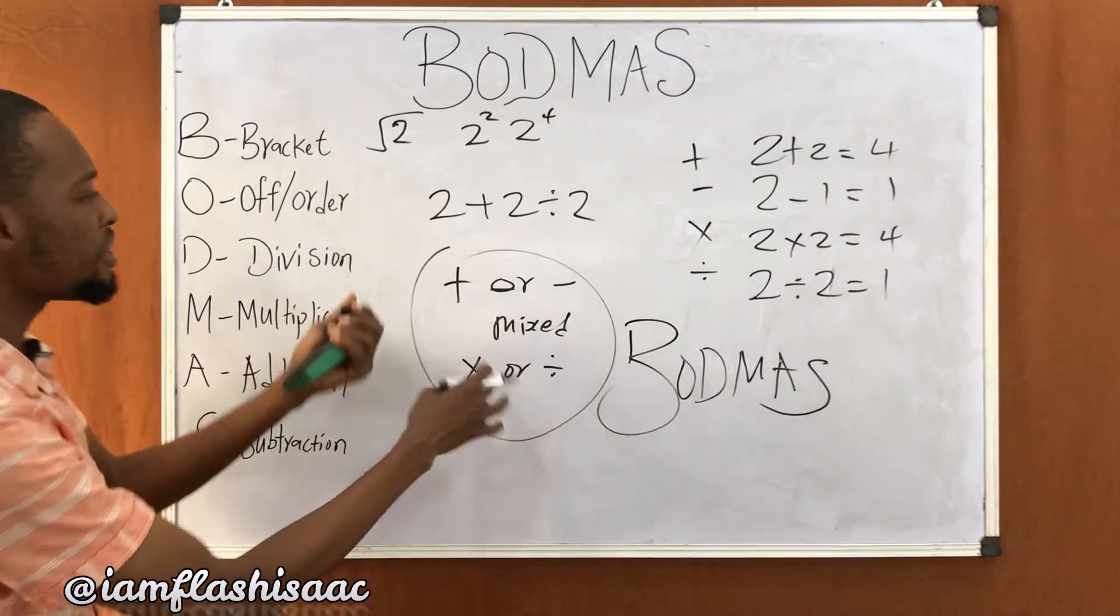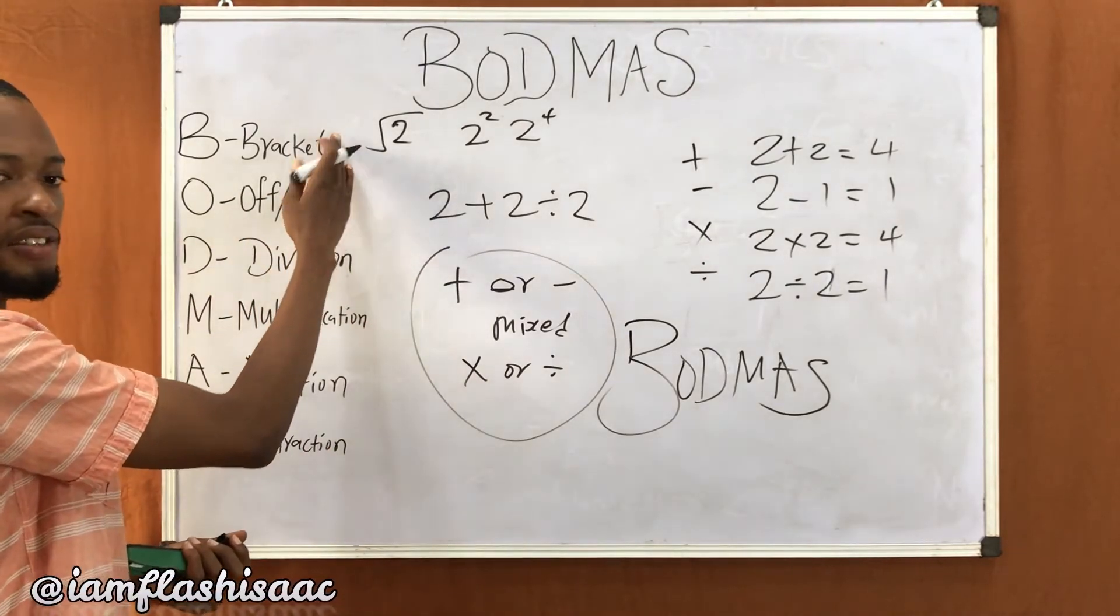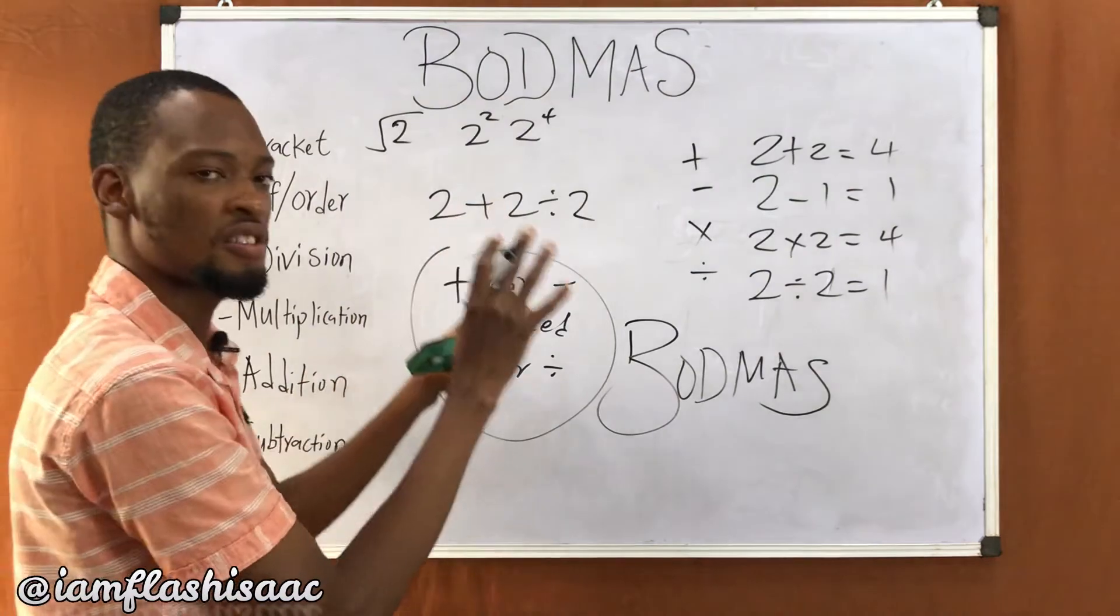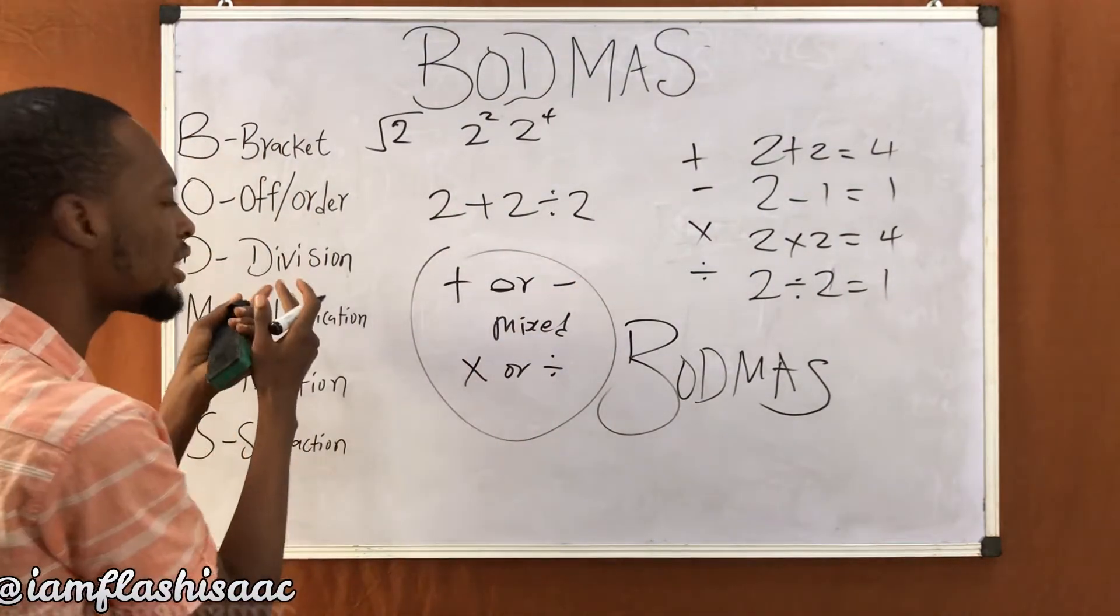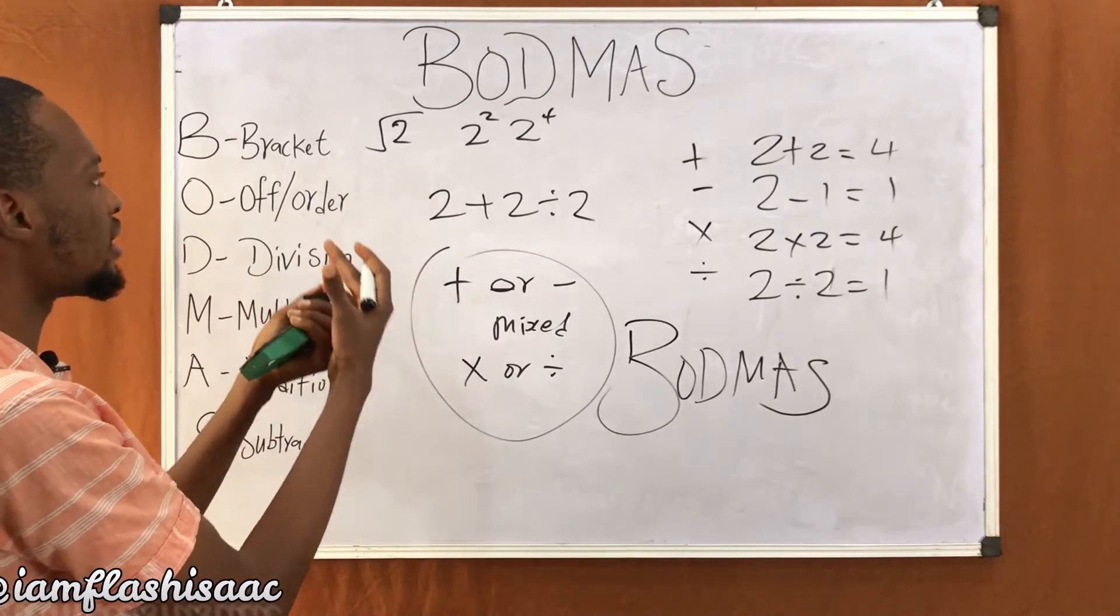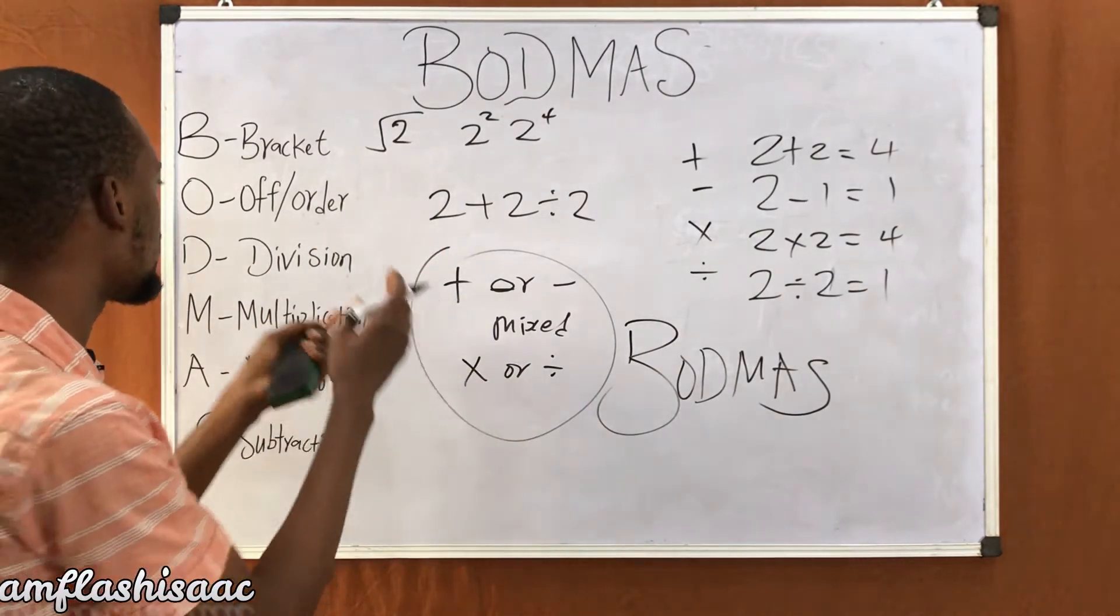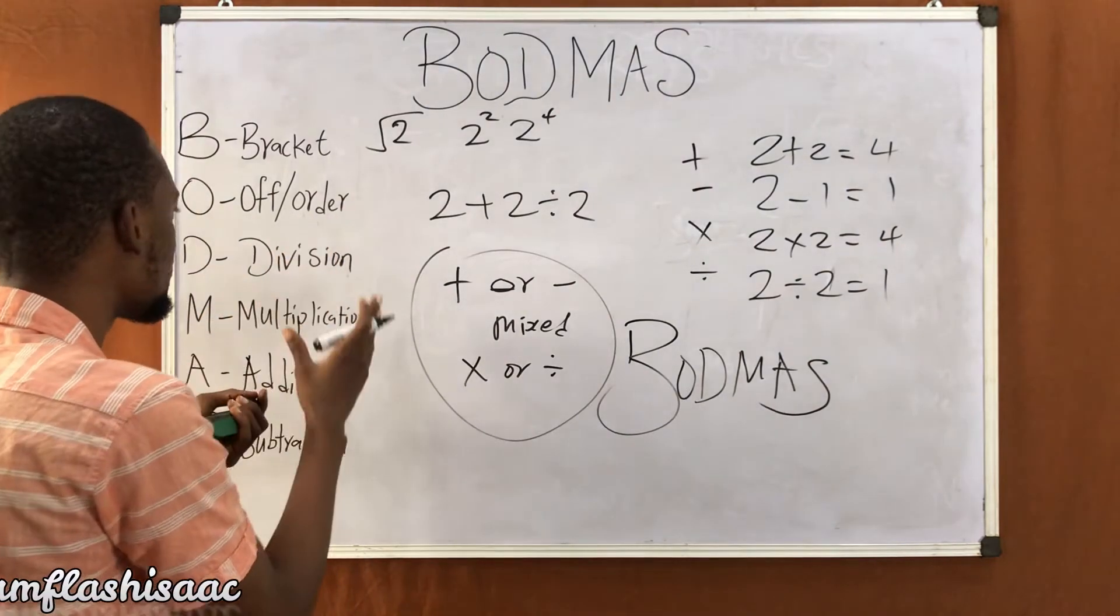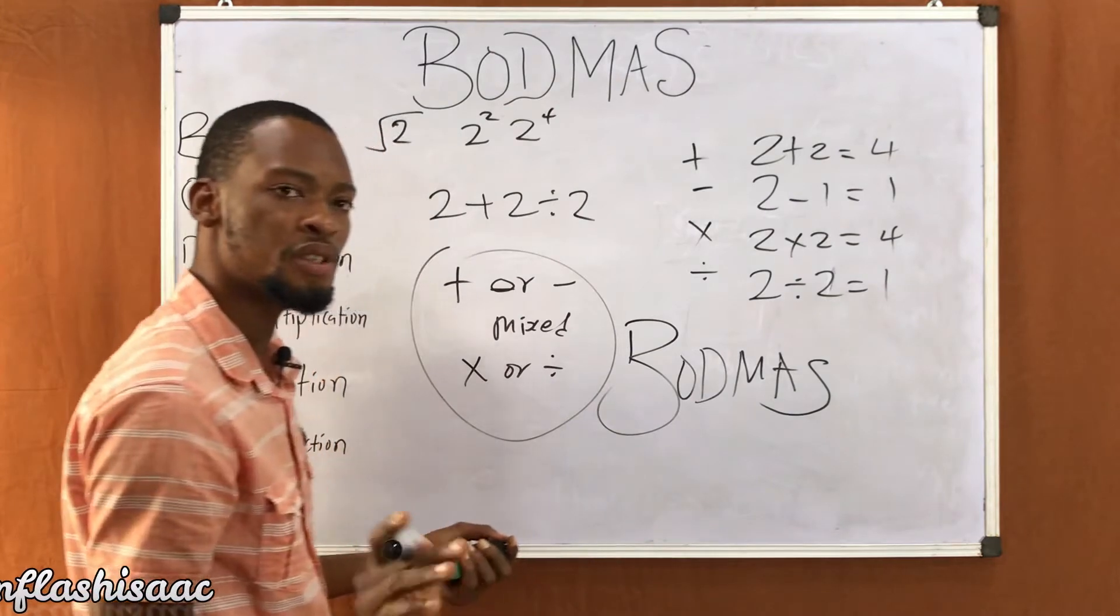A is addition, S is subtraction. So when these things are mixed, you follow this order. Check the question: is there a bracket? If there is, you solve the bracket first. Then next, is there an order or off, is there a power, is there functions? You solve. Is there division? So you follow the order.